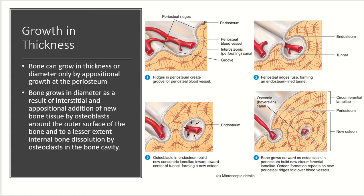Looking at growth in thickness, bone can also grow in thickness or diameter by appositional growth that occurs at the periosteum. Bone grows in diameter as a result of interstitial and appositional additions of new bone tissue by osteoblasts. This occurs around the outer surface of the bone, as well as to a lesser extent on the internal bone by dissolution by osteoclasts in the bone cavity.